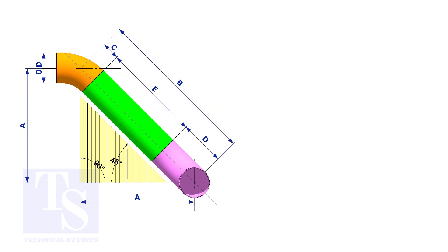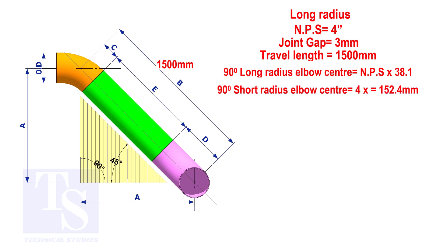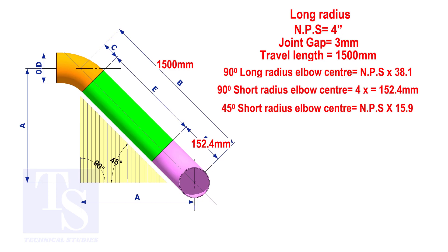Assume that the elbows are long radius. Calculate the true length of the pipe. The elbow center is the nominal pipe size multiplied by 38.1, so the elbow center of the 90 degree elbow is 152.4 millimeters. To calculate the elbow center of a 45 degree long radius elbow, multiply the nominal pipe size by 15.9. The answer is 63.6 millimeters.